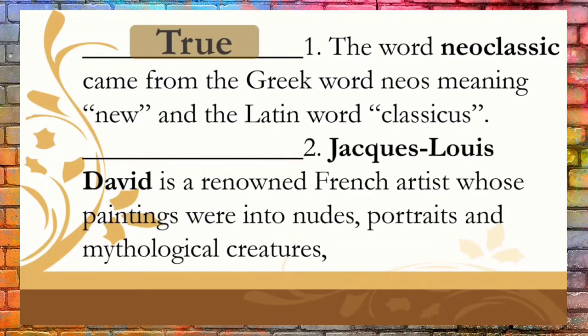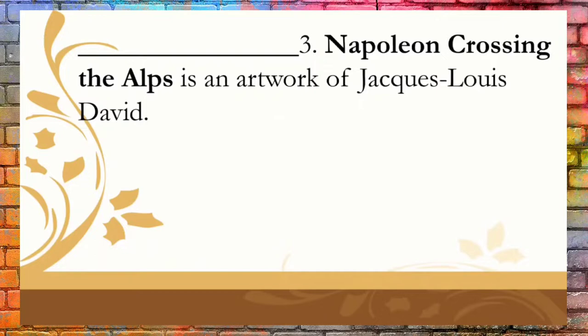Statement 2: Jacques-Louis David is a renowned French artist whose paintings were into nudes, portraits, and mythological creatures. The correct answer is false. Statement 3: Napoleon Crossing the Alps is an artwork of Jacques-Louis David. The correct answer is true.